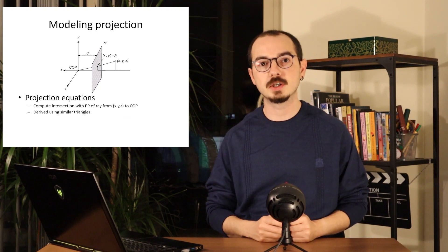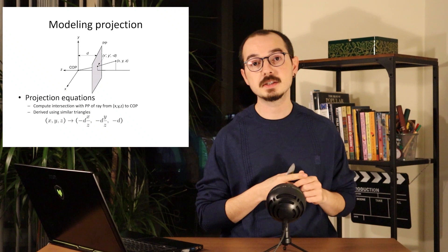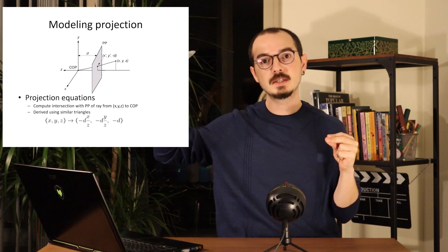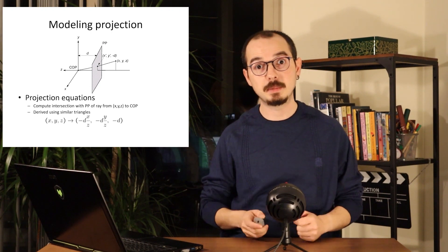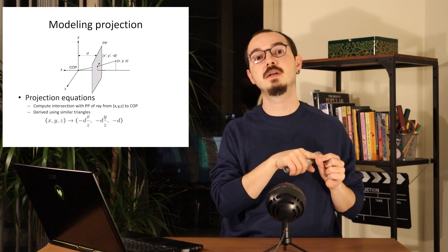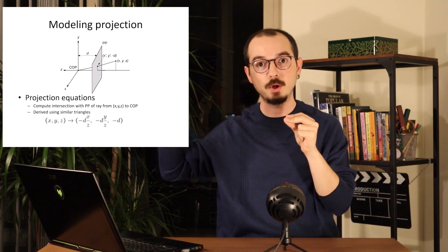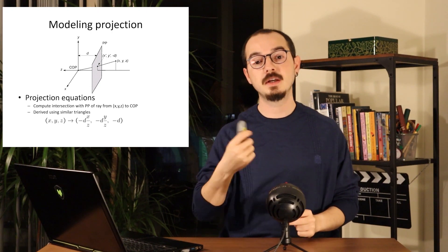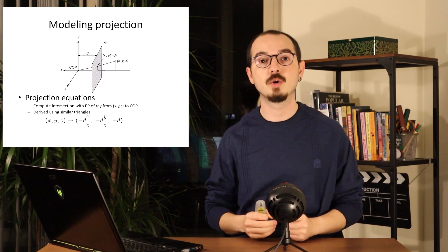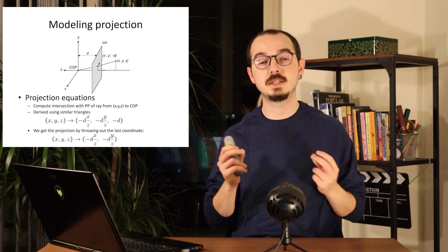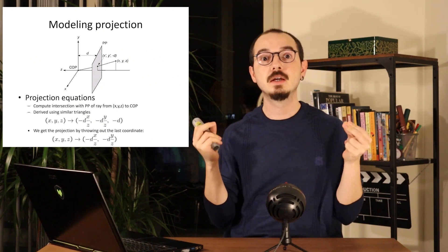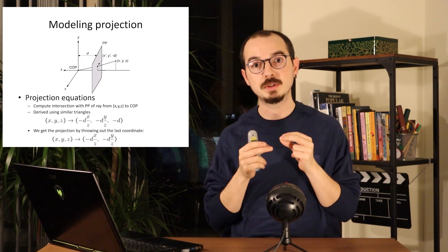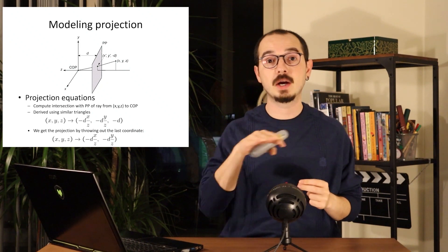We can derive simple projection equations by using similar triangles, as we discussed in our last lecture. When you draw a line from the center of projection to the object in 3D space, it creates a rectangle when we project it down to the XZ plane. A similar triangle also happens on the image plane when we look at the projection of the 3D point. We can derive where the 3D point will end up on our image plane simply by dividing the X and Y coordinates by the Z coordinate — the depth. The distance D of the image plane to the center of projection represents the focal length of our camera, and the focal length will change how large things appear, scaling the X and Y coordinates of the image.